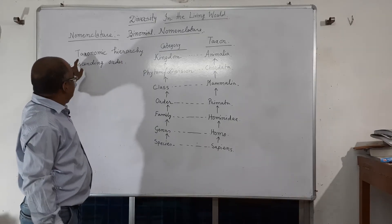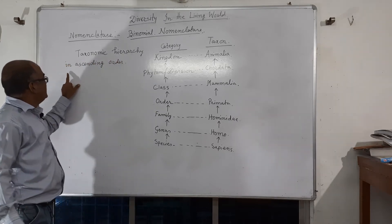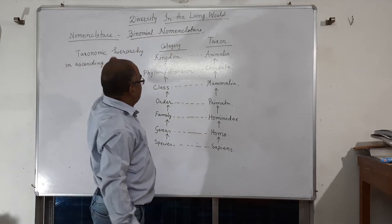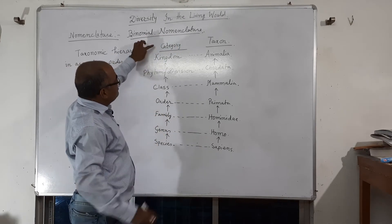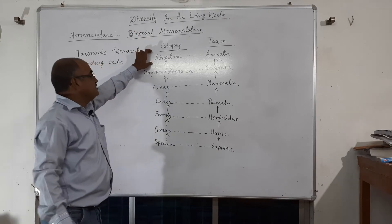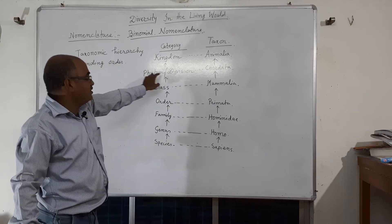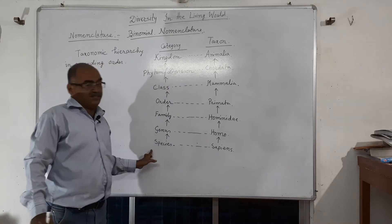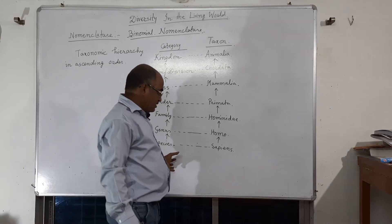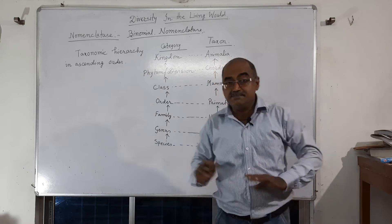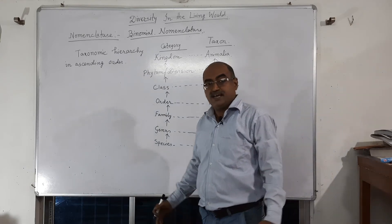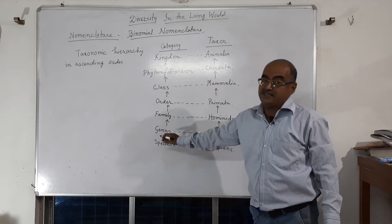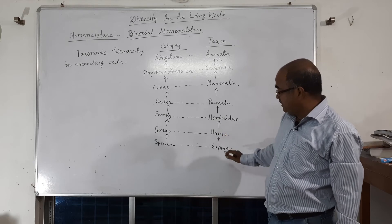I have written about the taxonomic hierarchy in ascending order. In the category, the highest form is kingdom, then phylum or division, then class, then order, then family, then genus, and then species. Some species with similar properties together form a genus.